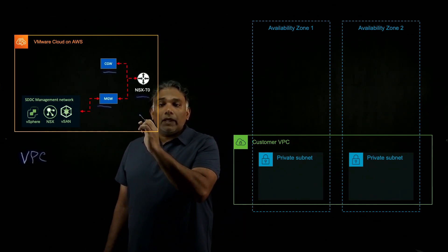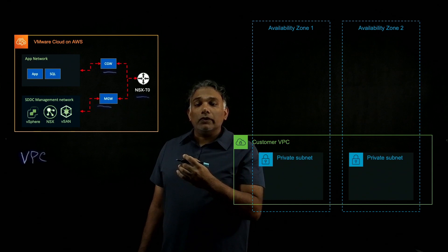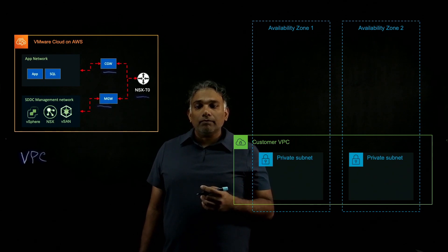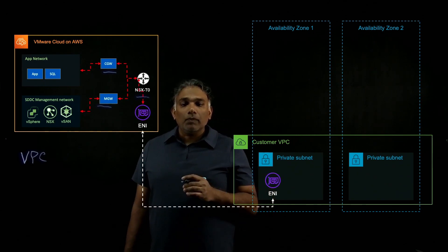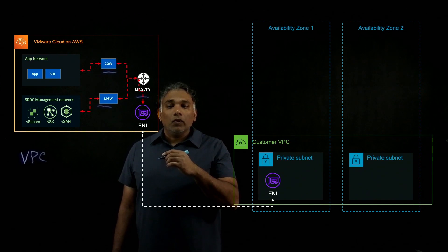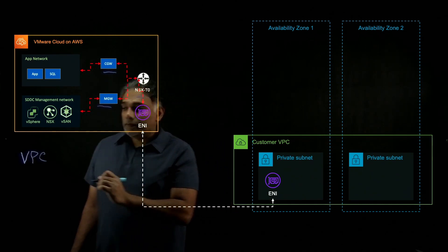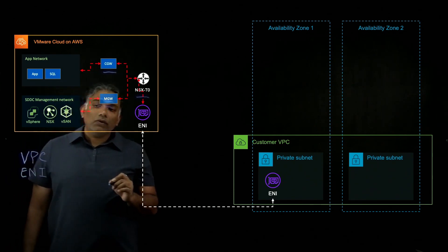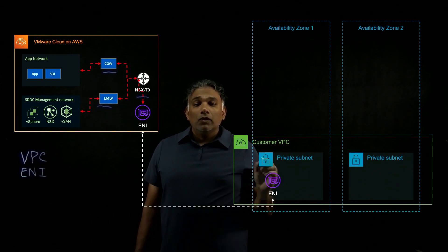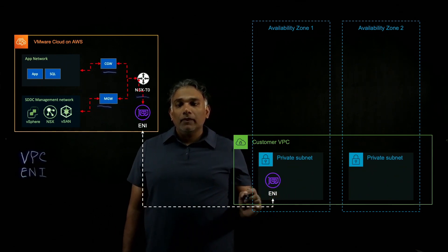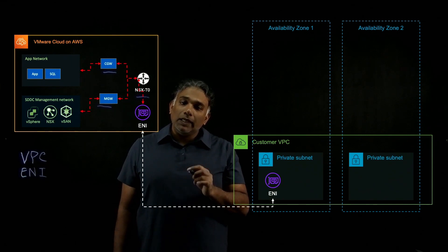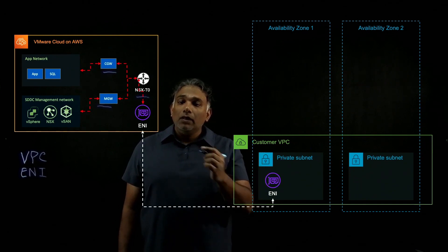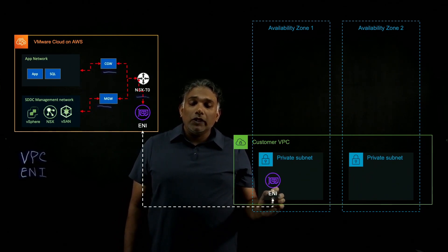The compute gateway, however, is where you would actually deploy all of your workloads, such as web servers, SQL servers, applications, and desktops. Once this is deployed, the SDDC deploys what's called an elastic network interface, or ENI, between each of the hosts in your SDDC to your customer VPC that you provisioned. There's only one active ENI connection at any given time, providing you a connectivity of at least 25 gigabits per second between your SDDC to your customer VPC.